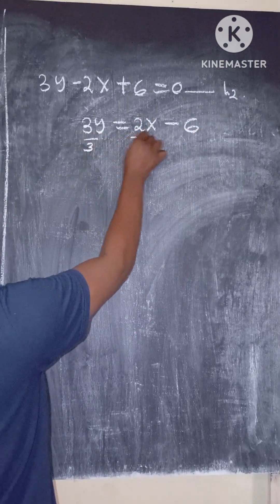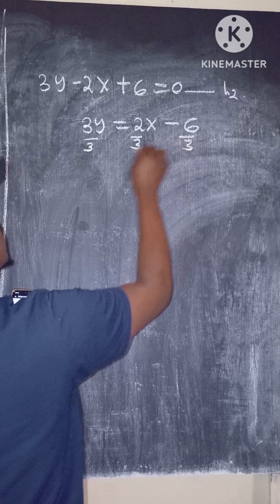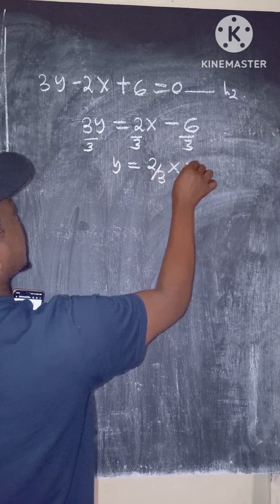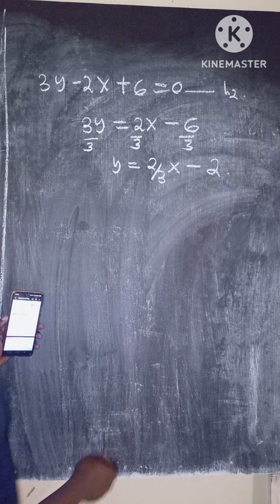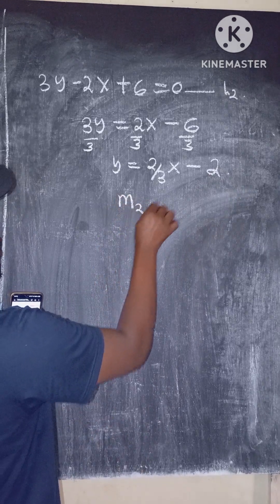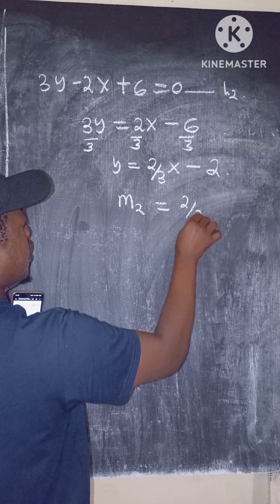Divide by 3. y equals 2 over 3 x minus 2. This is line 2, so m2 equals 2 over 3.